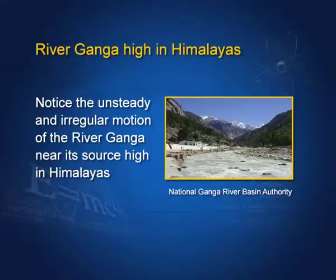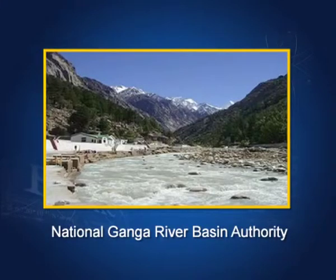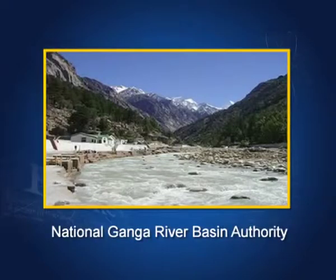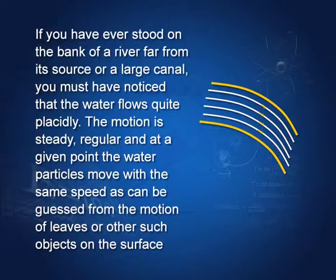I will give you a very interesting example. If you have visited some place higher up in the Himalayas, you must have seen a river or stream there. I have a picture of river Ganga in the Himalayas, and you see the water flowing not very quietly, not very orderly — there are eddies if there is an obstruction. This kind of flow is not a streamline flow. Streamline flow is where it is very steady and if you concentrate at a point, then the direction of flow and the velocity of flow of water is constant.